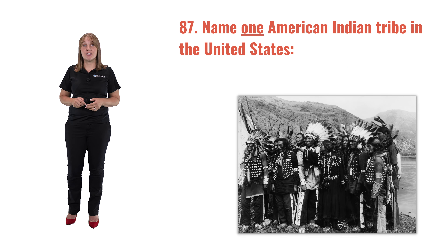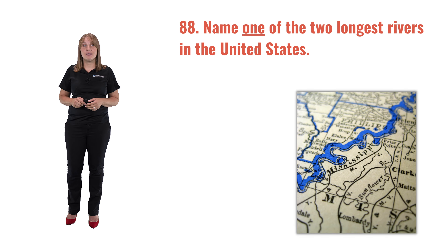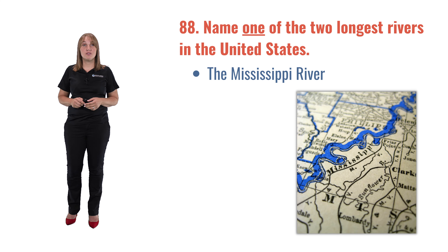Question 87: Name one American Indian tribe in the United States. The answer is Cherokee. Question 88: Name one of the two longest rivers in the United States. The answer is the Mississippi River.